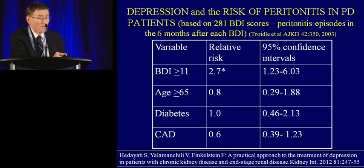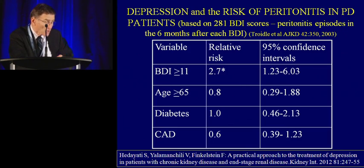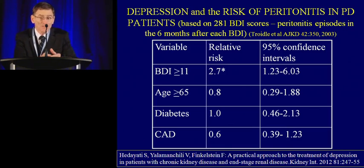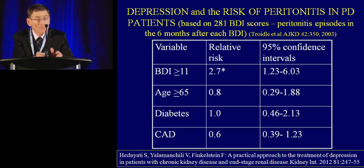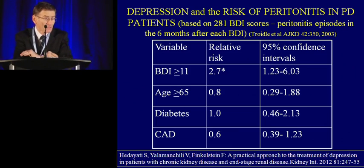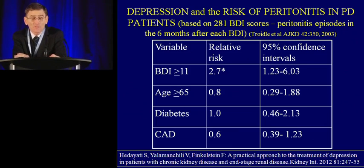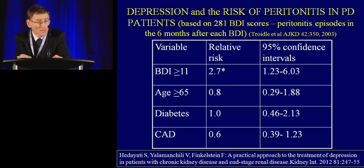No one has yet shown that treating depression improves outcomes, and that's the piece that needs to be looked at. A couple of trials have been started looking at treatment of depression in dialysis patients and its effect on outcomes, but those studies have not been completed. Depression occurs commonly — at any point in time, about 25 to 30 percent of dialysis patients, hemodialysis or peritoneal dialysis, will have a clinical depression — associated with higher mortality, complication, and infection rates.